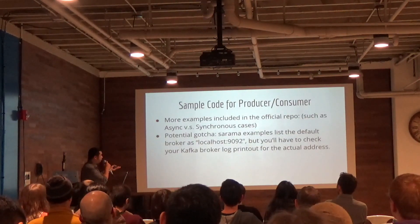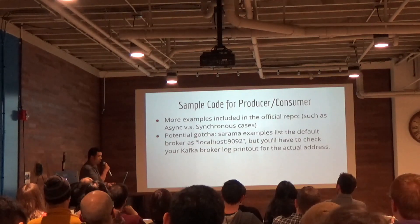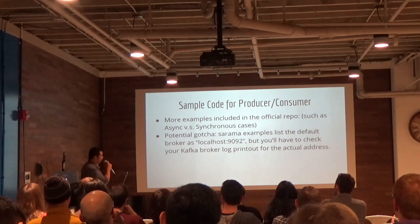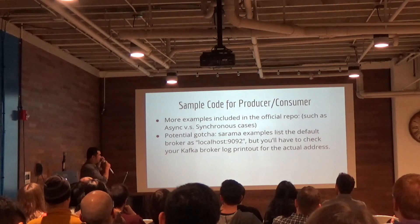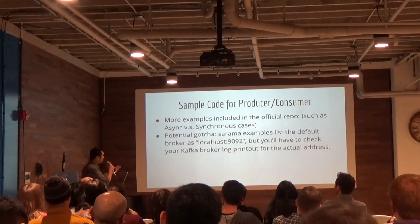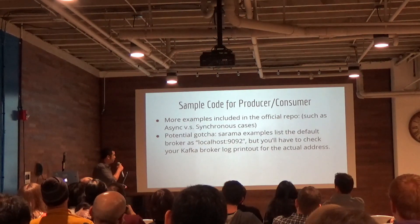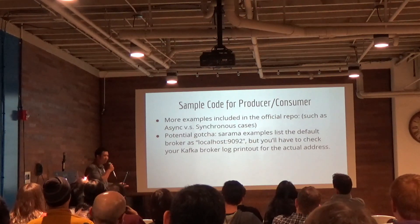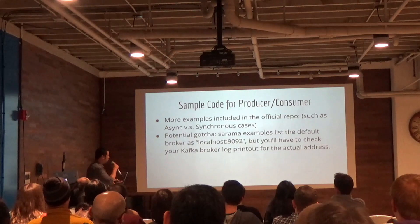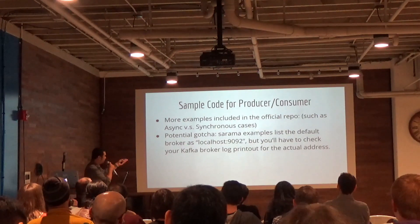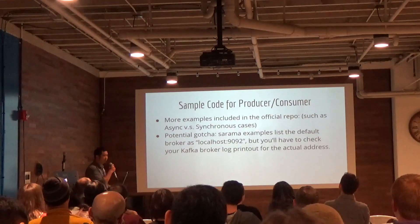As a sample for the producer, there's more in the official repo — it's really complete. But one potential gotcha to mention is that I believe it's log4j where the Zookeeper and Kafka server output is being dumped to. By default, Sarama's documentation says to look at local port 1992. It's not. So I used a bunch of four-letter words as I was trying to debug that. Yeah, you will have to check the Kafka broker log to figure out what port it really is.